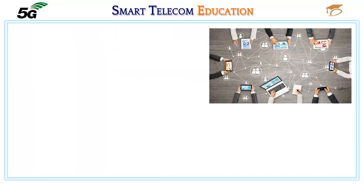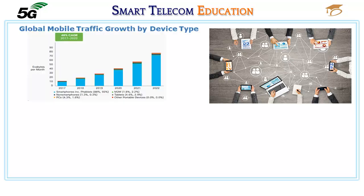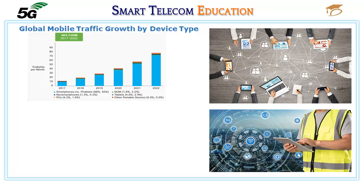With multiple devices, each user has a growing number of connections. Another significant trend is the growth of smartphones, including tablets, from 50% share of total devices and connections in 2017 to over 54% by 2022. The most noticeable growth is going to occur in M2M connections, followed by tablets. M2M mobile connections will reach nearly a third of total devices and connections by 2022, growing at 32% CAGR from 2017 to 2022, while tablets will grow at 14% CAGR during the same period.